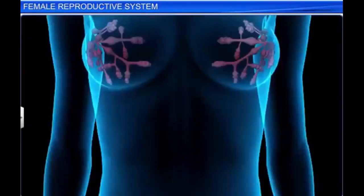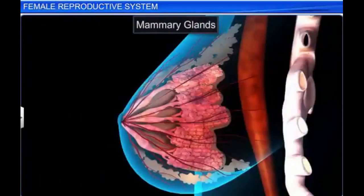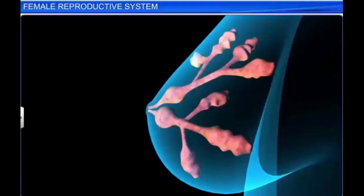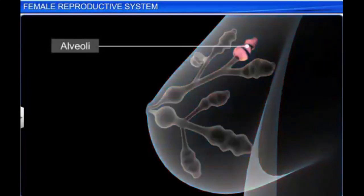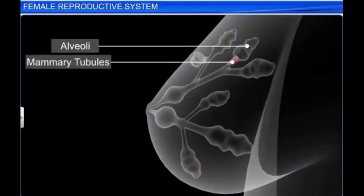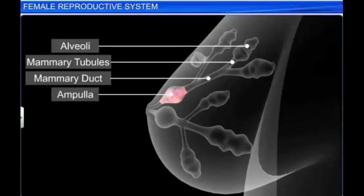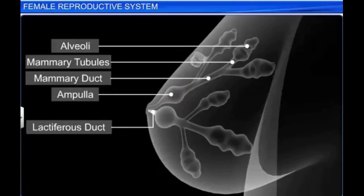The female reproductive system is supported by the mammary glands. The mammary glands, or breasts, are modified sweat glands that lie over the pectoral muscles. They contain glandular tissues and a variable amount of fat. Internally, each breast is divided into 15 to 20 mammary lobes, containing clusters of cells called the alveoli. The alveoli open into the mammary tubules. The tubules of each lobe join to form the mammary duct. Several ducts join to form a wider ampulla, which is connected to the lactiferous duct. The lactiferous duct opens out through the nipple, from which milk is sucked out.